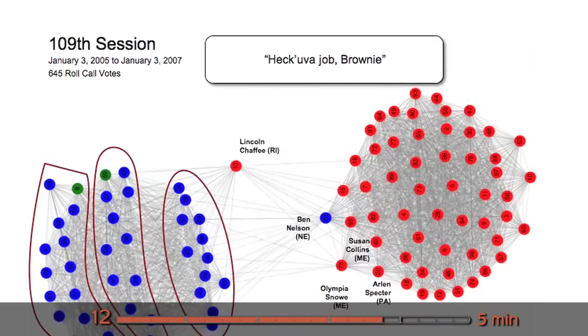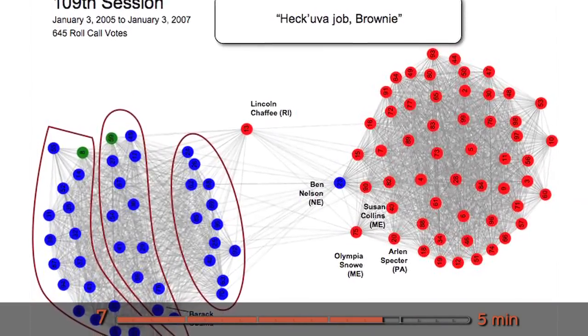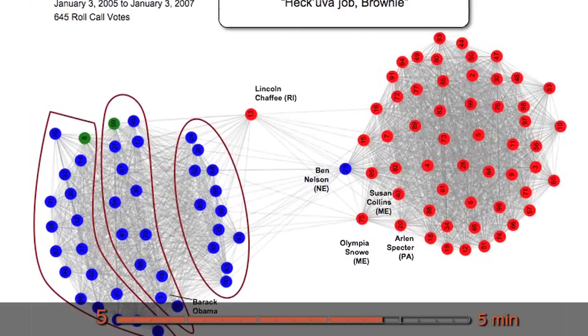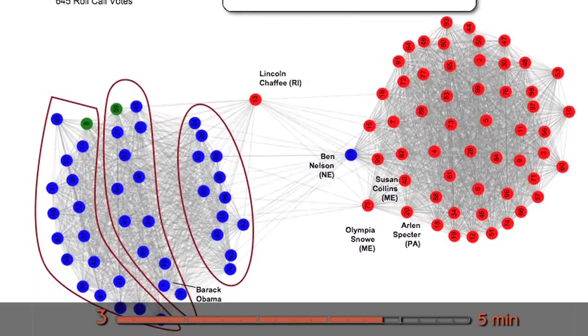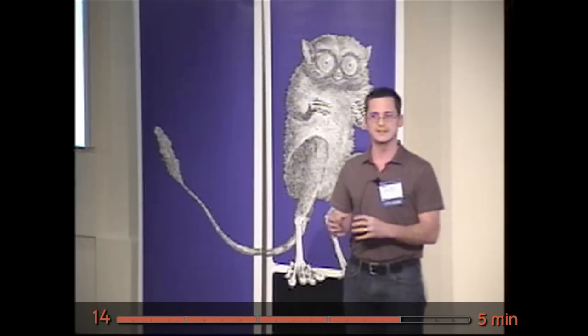This is the heck of a job period - the 109th session. This incorporates Hurricane Katrina, the Tom DeLay scandals, Jack Abramoff. A lot of things happened in that period. The Republicans stayed very cohesive. The Democrats are split.